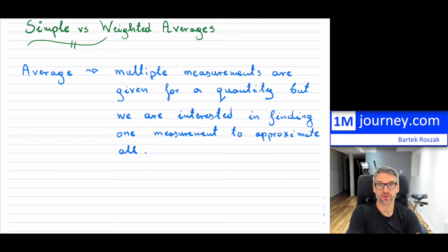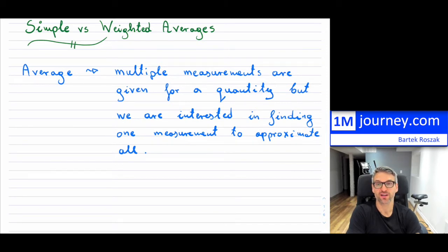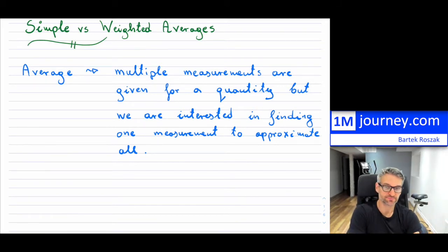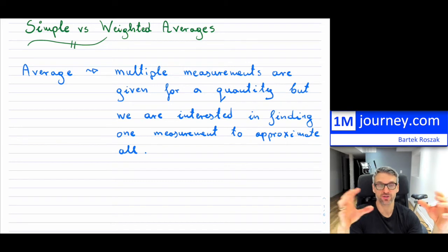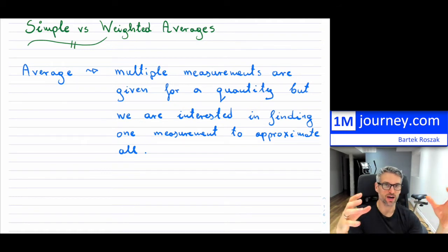An average in general: if you are given a quantity which you have measured — maybe mass, maybe volume, maybe some flow rate for medications, maybe your grades in school — you typically will have multiple measurements of that quantity. When you have multiple measurements, sometimes what we want to do is take all of those measurements and approximate them in some good way with just one number, which we call an average.